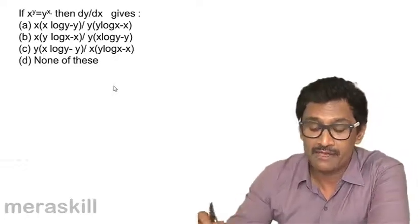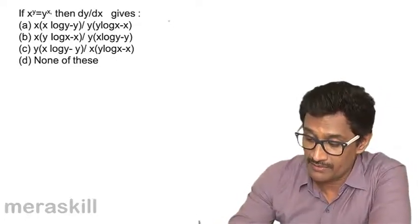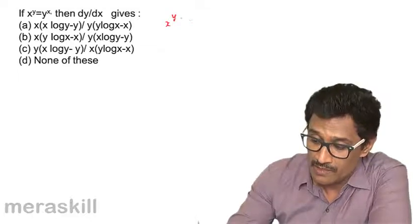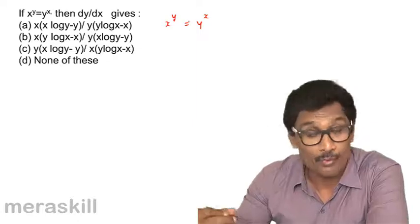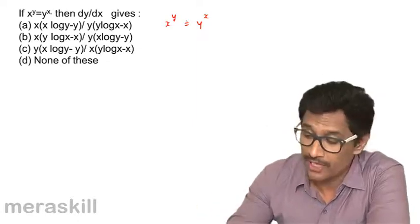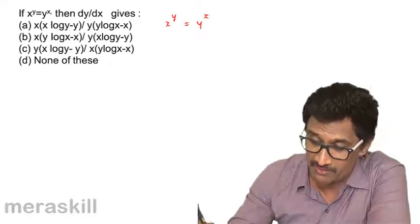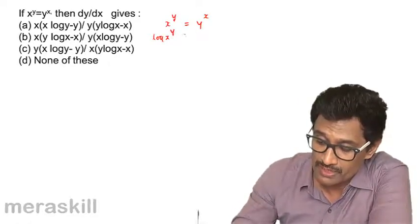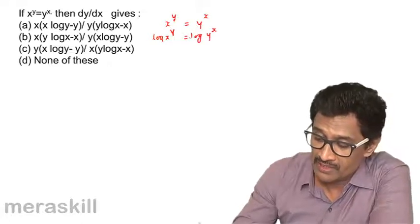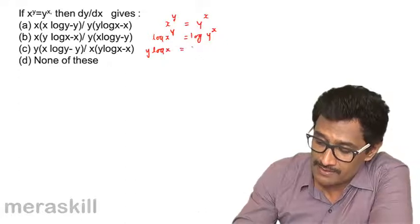We have x raised to y is equal to y raised to x. This is an interesting example where we have a variable raised to a variable on both sides. So we apply logarithms on both sides — taking logarithms converts this to y log x is equal to x log y.